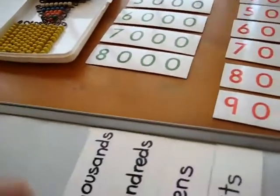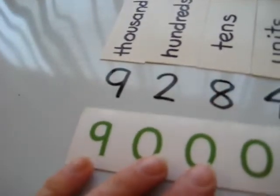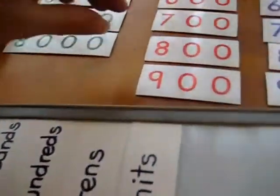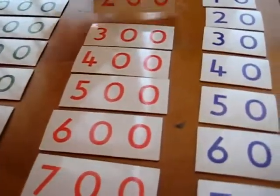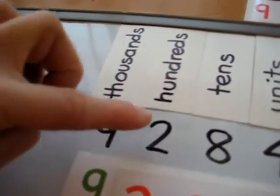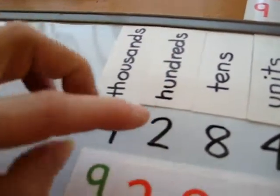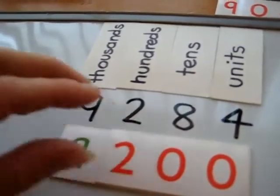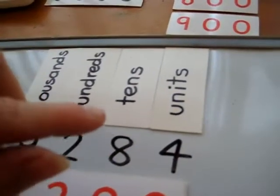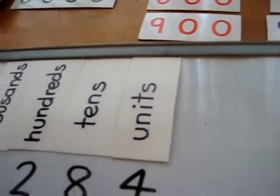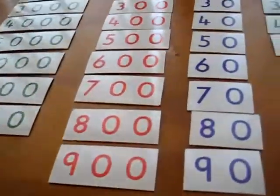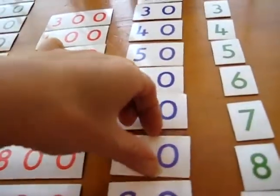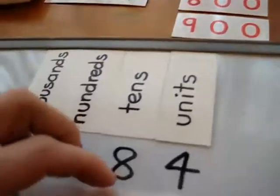So he needs to get the 9,000. We're starting with our thousands. So he reads 9,200. He can tell that it's a 200 because in the hundreds column, there's the 2. So he finds the 200. In our tens, we have the 8. So 8 tens is 80. So he finds 80, and he puts it on top.